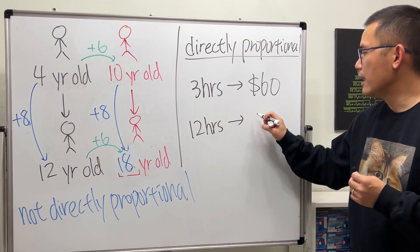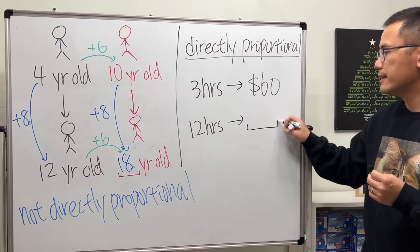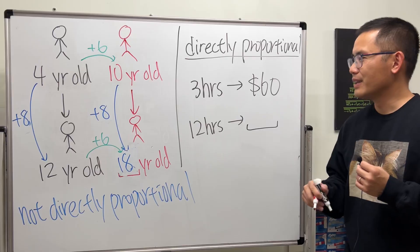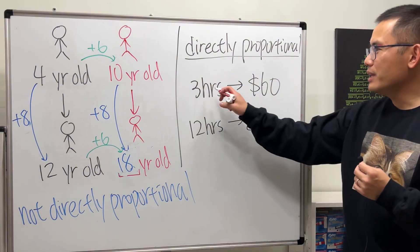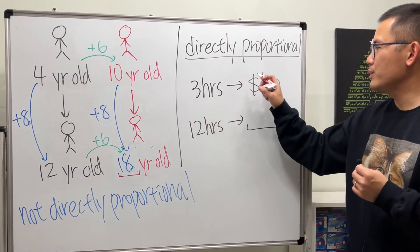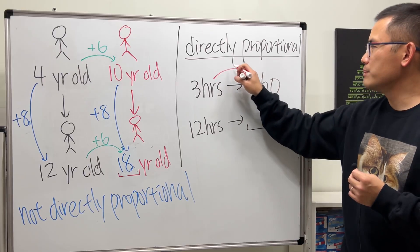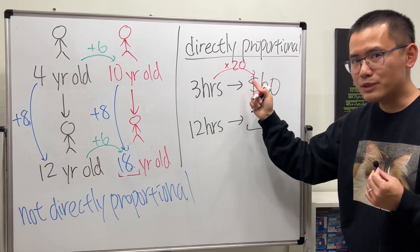Now my question for you guys is that if you work for 12 hours, then how much are you going to get paid? You have a few ways to do it. You can say, okay, going from 3 to 60, that's just multiply by 20.